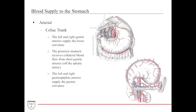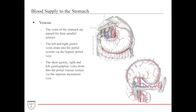The blood supply of the stomach is almost entirely from the celiac trunk, whether via the left and right gastric or left and right gastroepiploic arteries. The posterior stomach receives collateral blood flow from the short gastric arteries off the splenic artery. Venous return parallels the arteries — left and right gastric veins drain into the portal system via the hepatic portal vein, while the short gastric and gastroepiploic veins drain via the superior mesenteric vein.